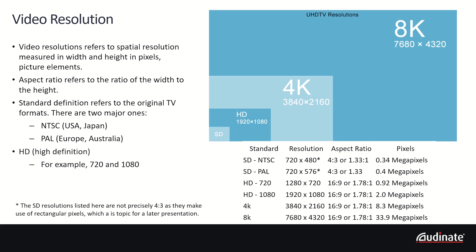Next came high definition, or HD. When HD was originally defined there were 18 formats. Typically two of these formats are the most common: 720 and 1080, where those numbers refer to the number of scan lines of resolution. The aspect ratio of HD is normally 16 by 9.